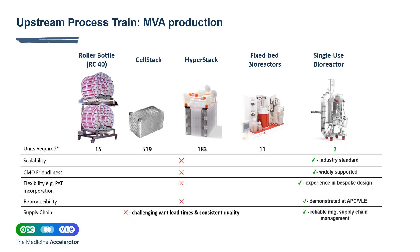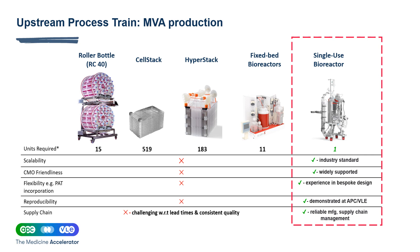This slide demonstrates a comparison between different platforms available to produce the same amount of product at the end stage. For example, 15 RC40 roller bottles are required to produce the same amount of product as one or two 50-liter single-use bioreactors, which are industrial standards widely supported by different vendors. This has been demonstrated at APC and VLE, and we have reliable manufacturing supply chain management.